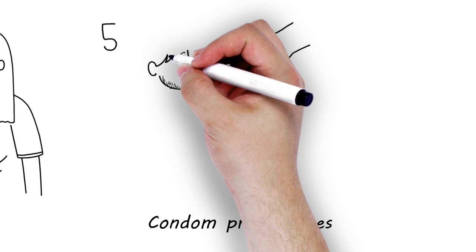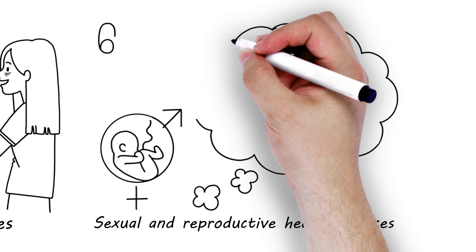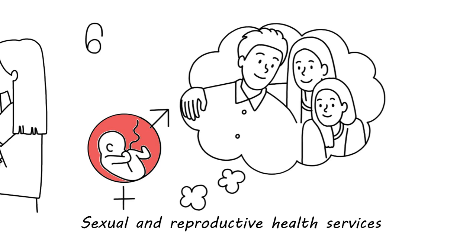Condom programs for people who use drugs and their sexual partners decrease sexual transmission of HIV and other sexually transmitted infections, or STIs. Sexual and reproductive health services include contraception and family planning advice, prenatal care, or STI diagnosis and treatment.